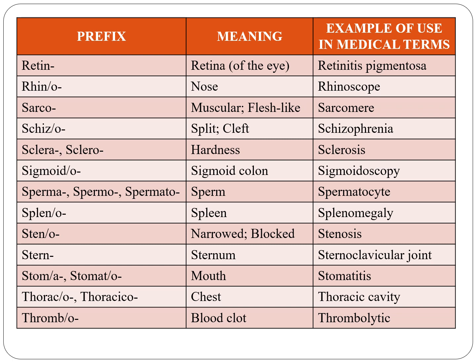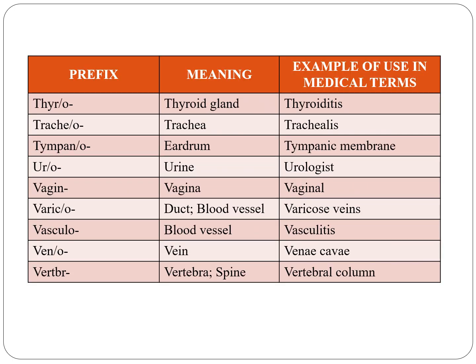Thoraco or thoracico indicates chest, for example thoracic cavity. Thrombo indicates blood clot, for example thrombocyte. Thyro indicates thyroid gland, for example thyroiditis.